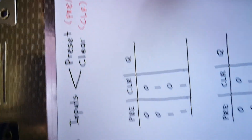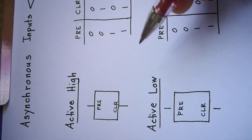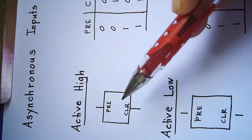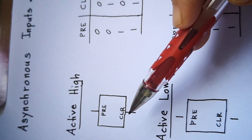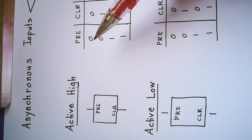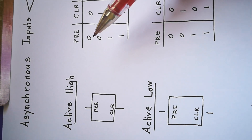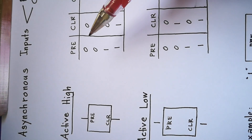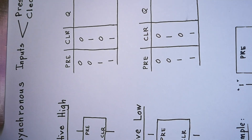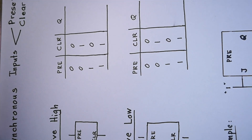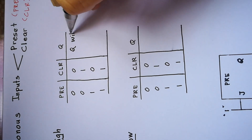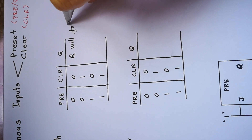Look at the first type of asynchronous inputs — we have active high. For active high pre and clear, the truth level: when both are 0, the pre and clear are inactive. For inactive, Q will follow the clock.